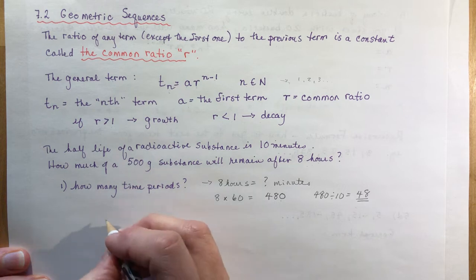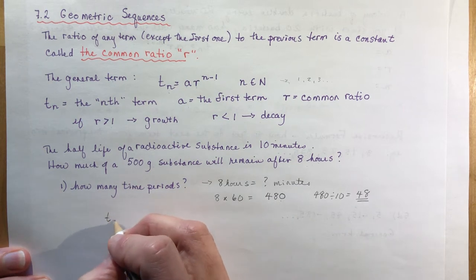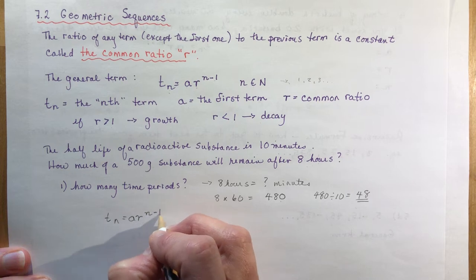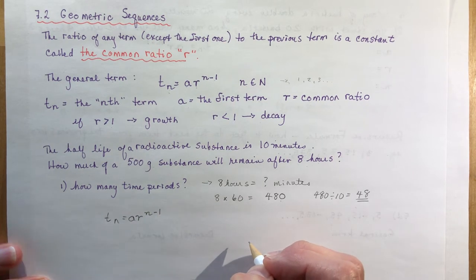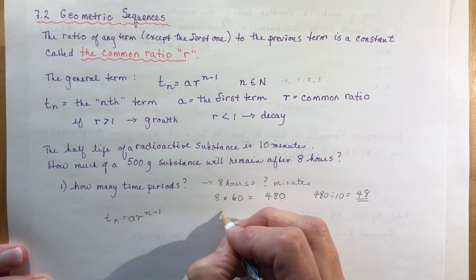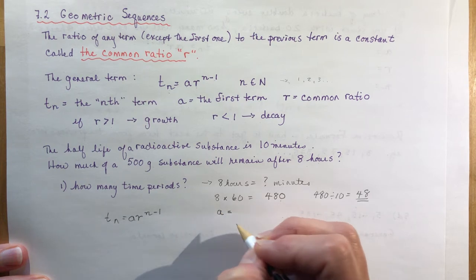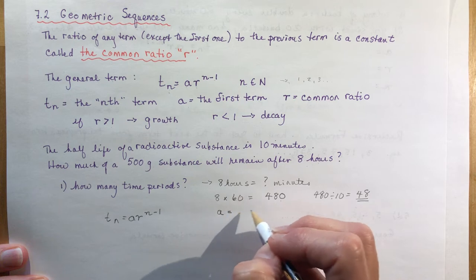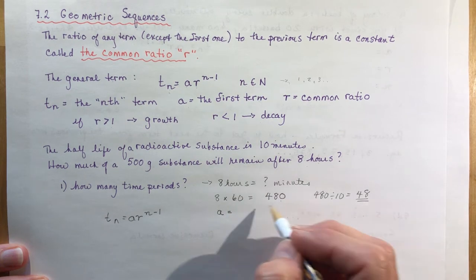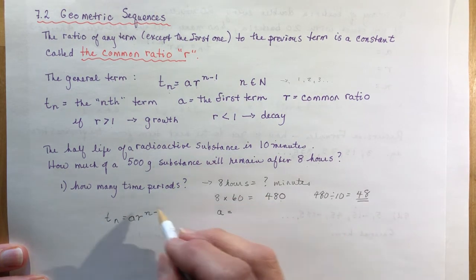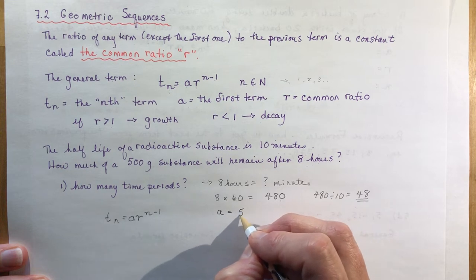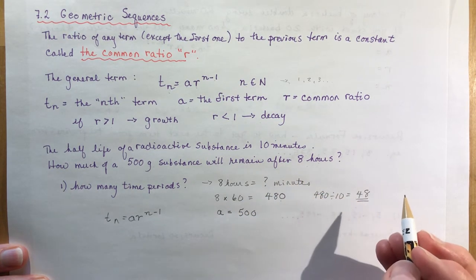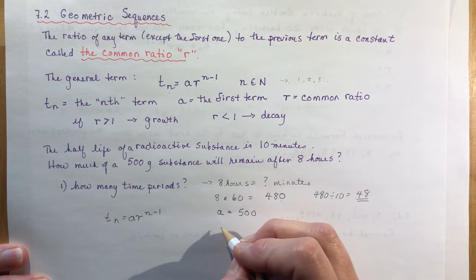Now go to the formula: tn equals a times r to the n minus 1. Write down an information box of everything you know so you know what to plug in. Here, a is 500 — that's the starting amount.